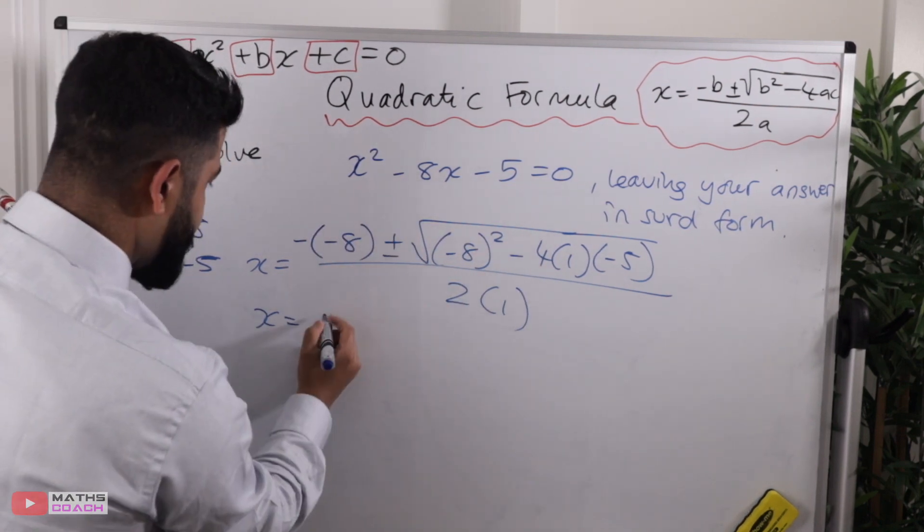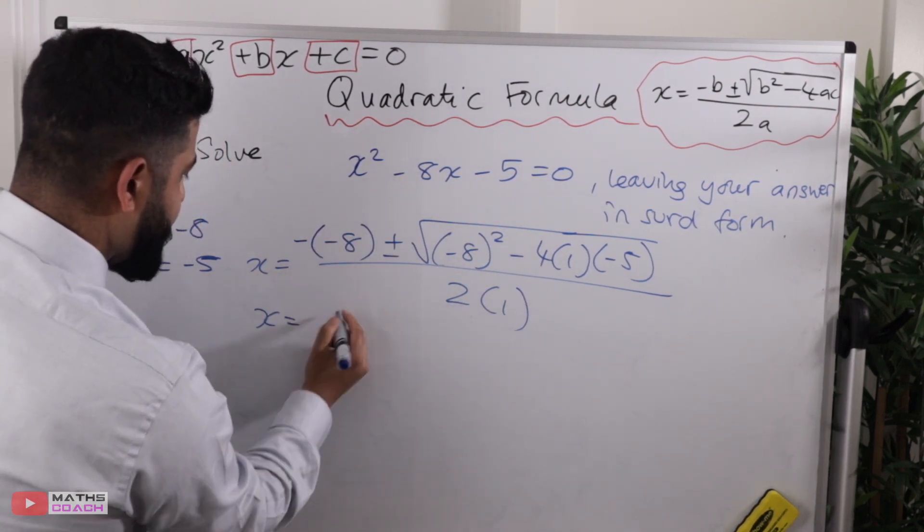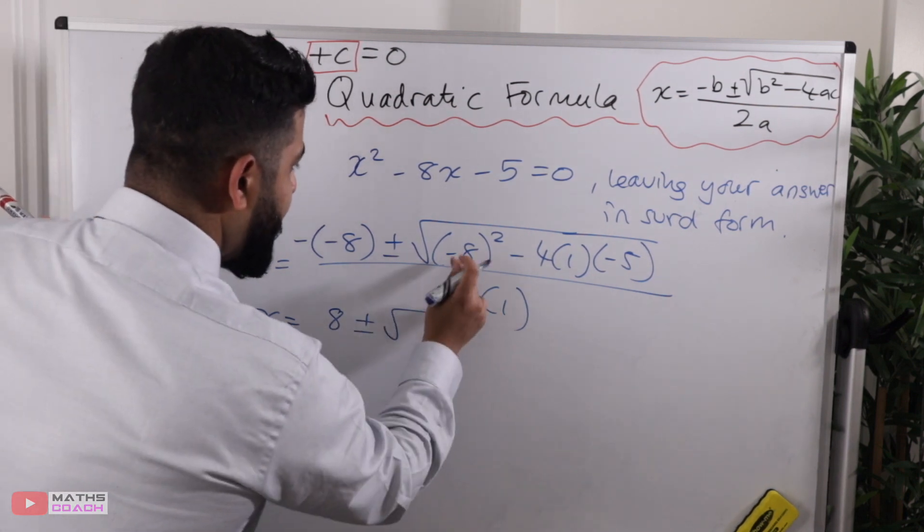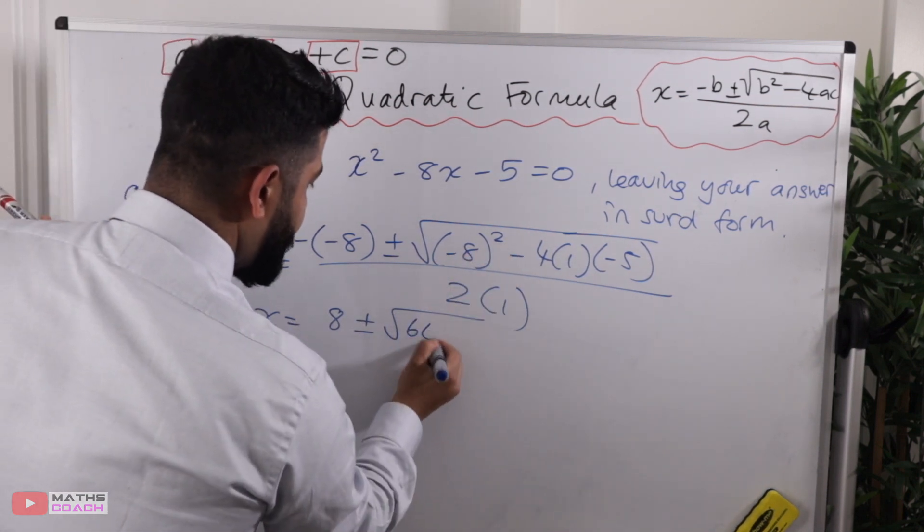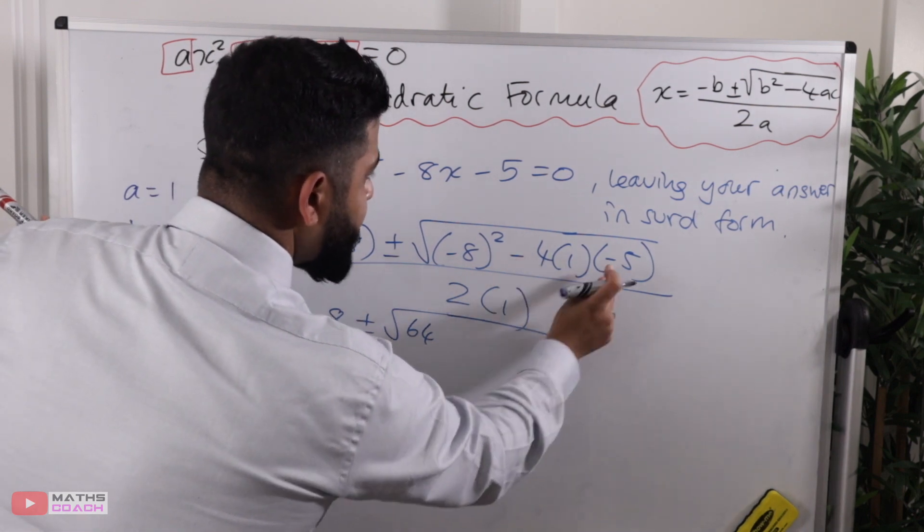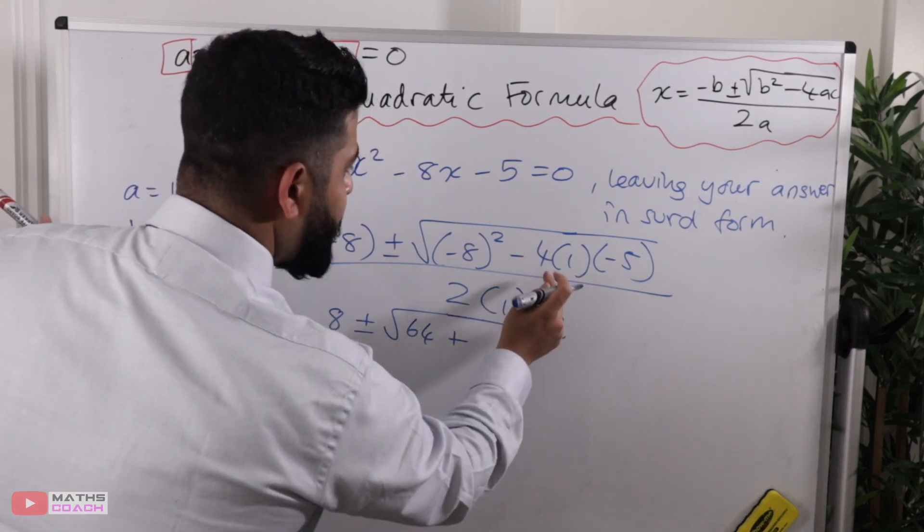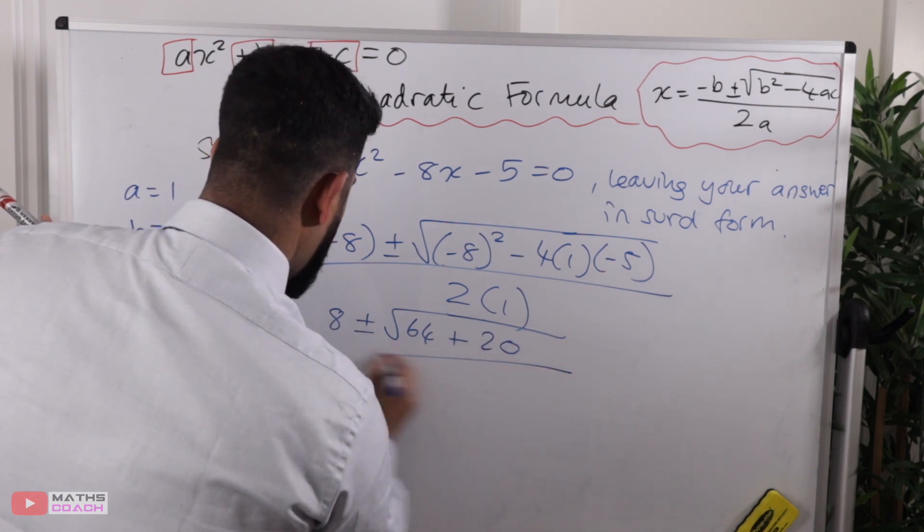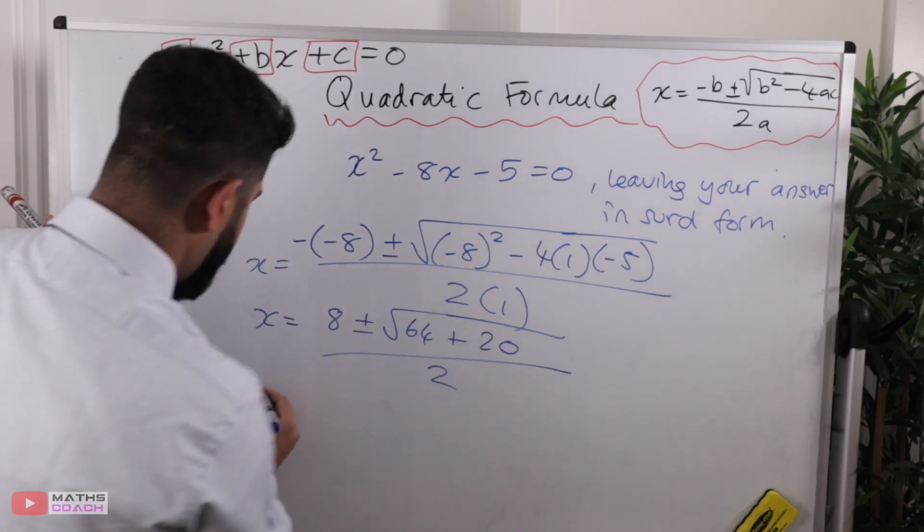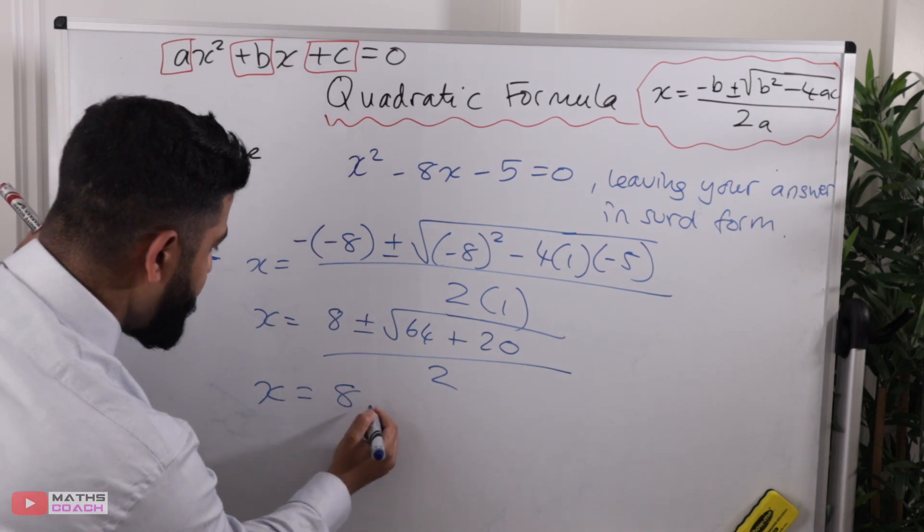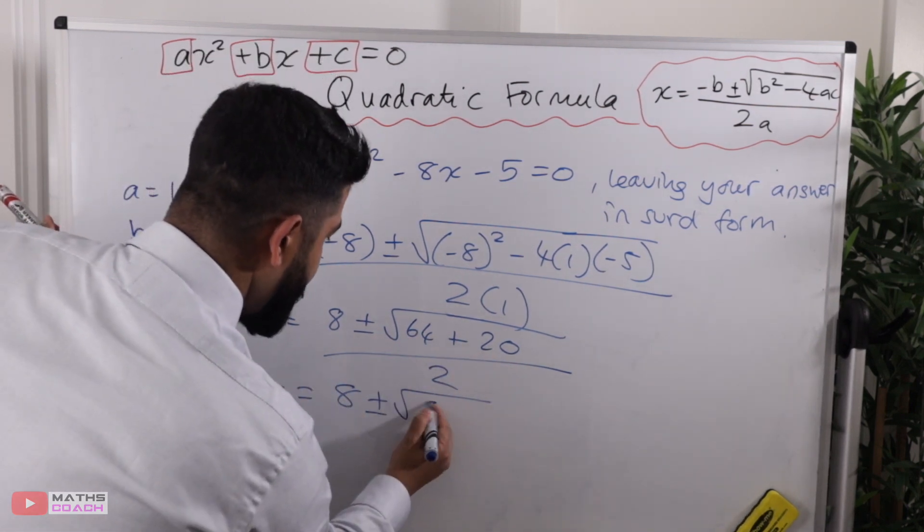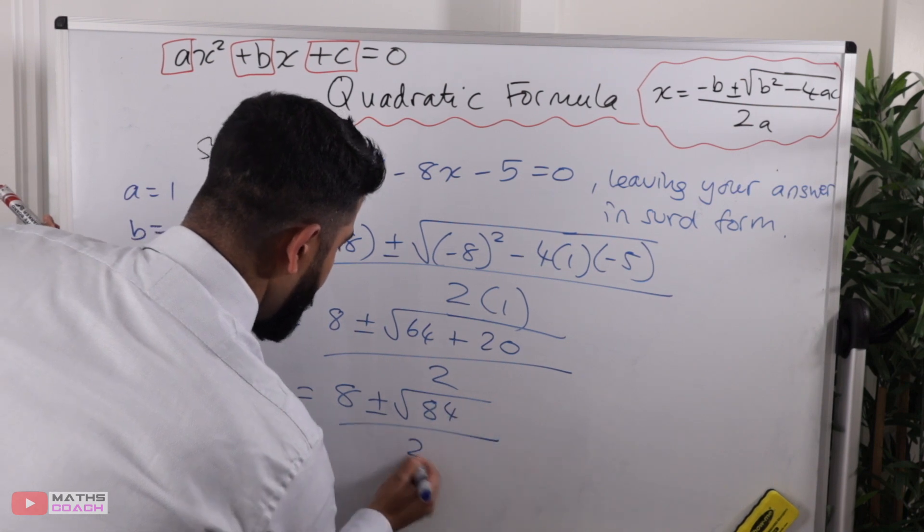Now we'll tidy things up, so minus times minus is a positive 8, plus and minus, that minus 8 squared is 64, minus and a minus here will give us a positive overall, 4 times 1 times 5 is plus 20, all over 2. So we have x equals 8 plus or minus, 64 plus 20 is 84, all over 2.